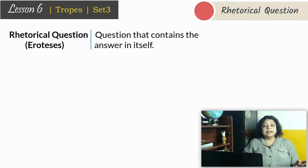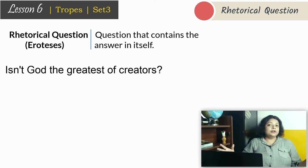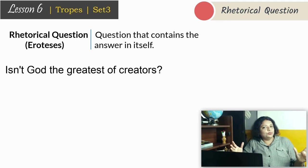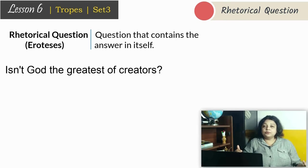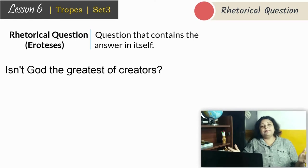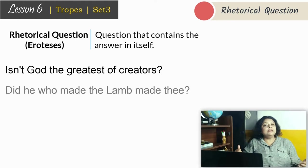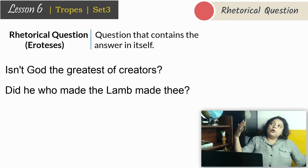For example, if somebody says 'Isn't God the greatest of creators?' — he is not actually asking you to answer him, he is convinced that God is the greatest. But in Blake's poem, when the little child asks the lamb 'Little lamb, dost thou know who made thee?' — that is a genuine question; the child is expecting the lamb to answer. When the same poet writes The Tyger and in the last line says 'Did he who make the lamb make thee?' — that is a rhetorical interrogation. All through the poem he has established that it is the same creator.